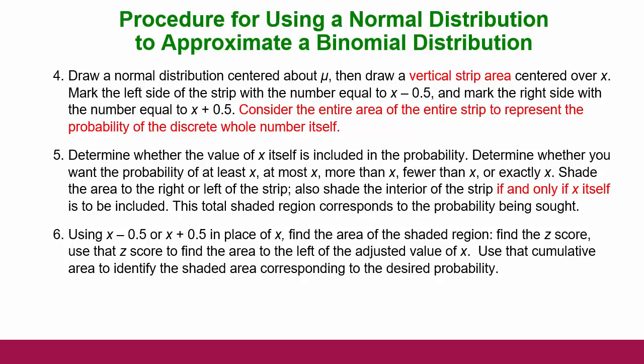You draw a normal distribution centered at whatever your mean was — remember your mean was n times p. Then draw a vertical strip area centered over X. If we're looking for a value of 3, we're looking for a strip of area in the normal curve that goes half a value up and half a value down, because we're looking for discrete data values using a continuous distribution curve. If the average number of Democratic voters out of 10 is 4, then 3 would be right about here — and to find the probability of exactly 3, we can't look for exactly 3 because the normal curve gives us area, and a single point has no width and therefore no area.